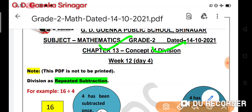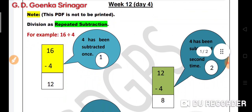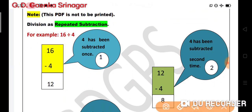In repeated subtraction we know that we repeatedly subtract the number till we get 0. Now let us have a look at the example 16 divided by 4. So we will subtract 4 from 16.